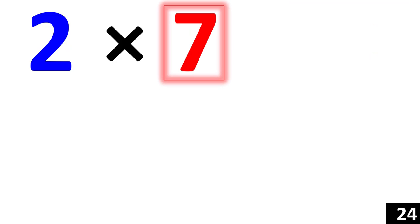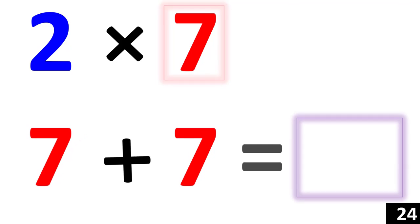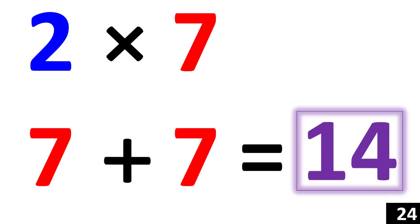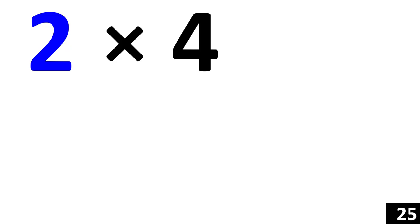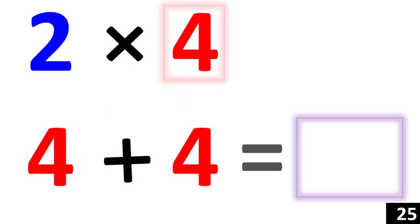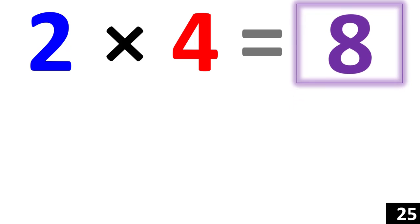2 times 7 is the same thing as 7 plus 7. 14. So 2 times 7 equals 14. And lastly, 2 times 4 is the same thing as 4 plus 4. 8. So 2 times 4 equals 8.